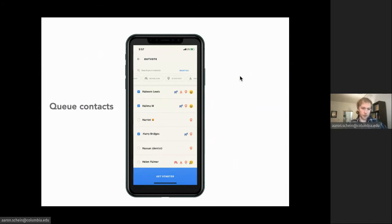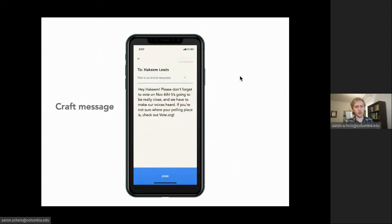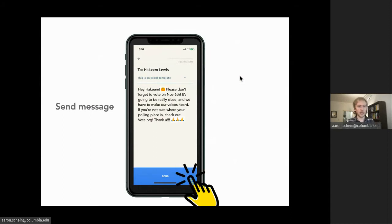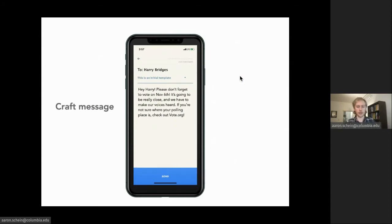The app asks the user to create a queue of friends they intend to message. Once the user has checked a few of their friends and they click Get Started, the app immediately takes the user to a messaging interface for the first person on their queue. They are presented with a default message which they can send as is or edit. When they press send, the app immediately takes them to a messaging interface for the next person on the queue.